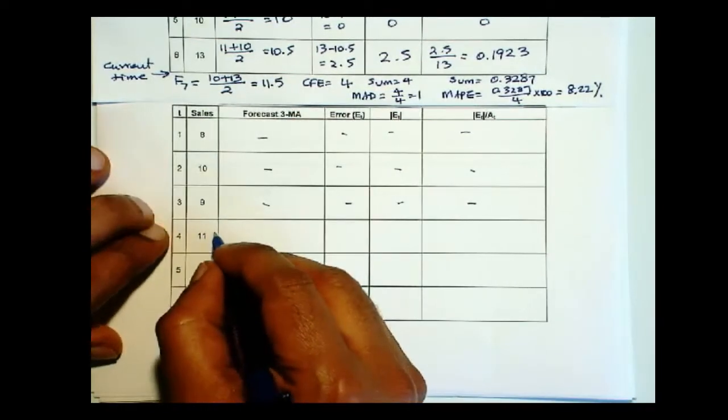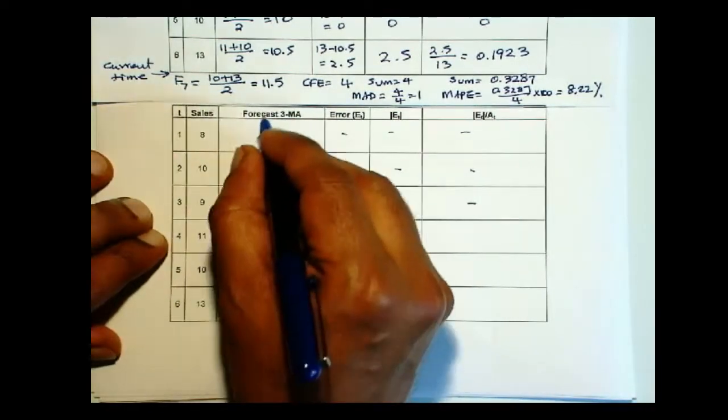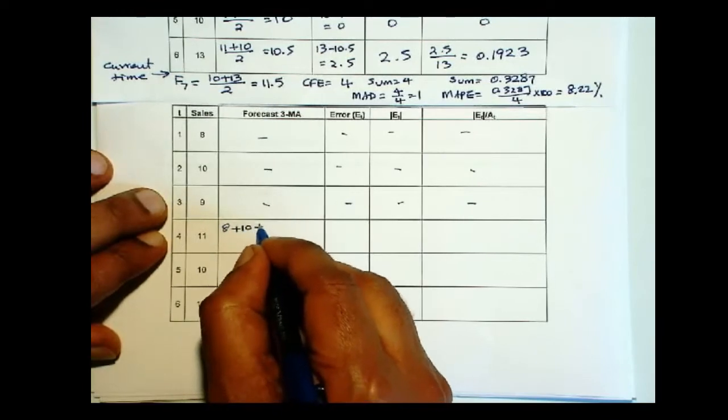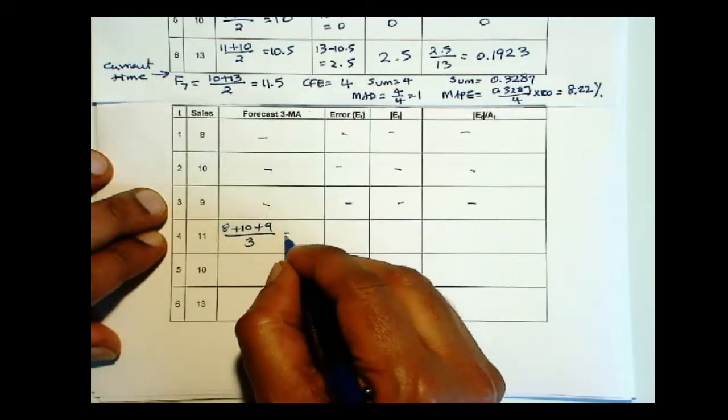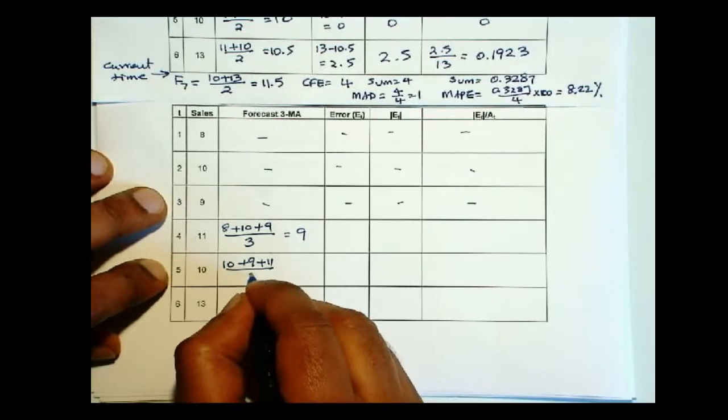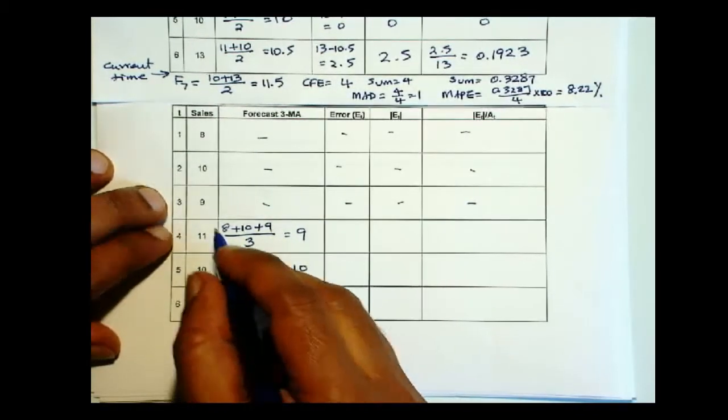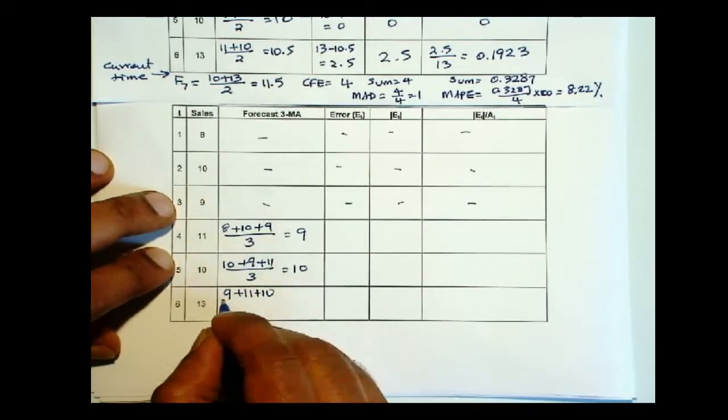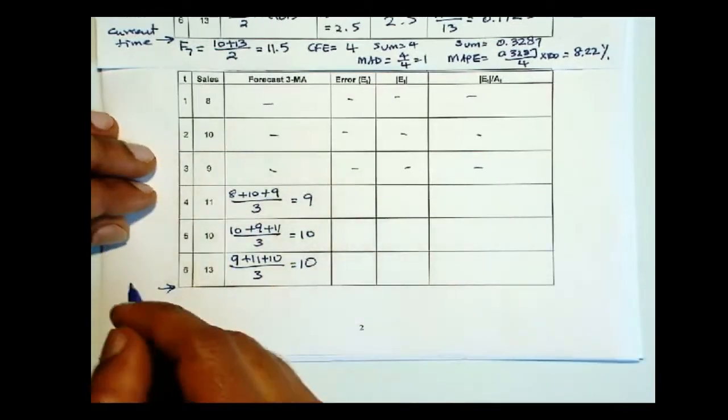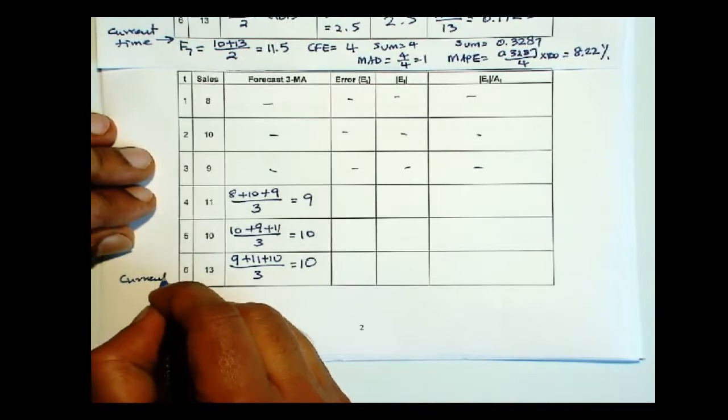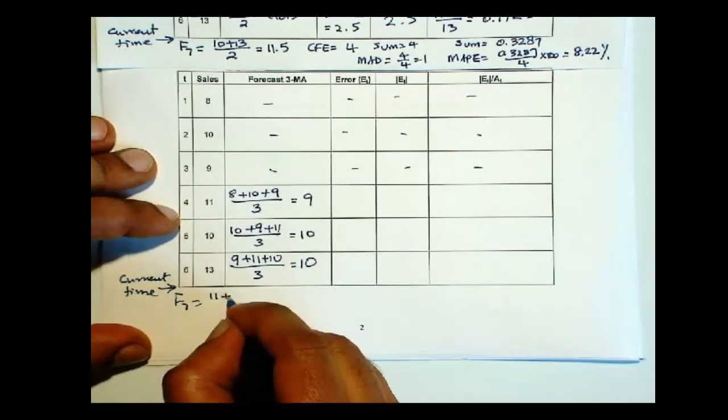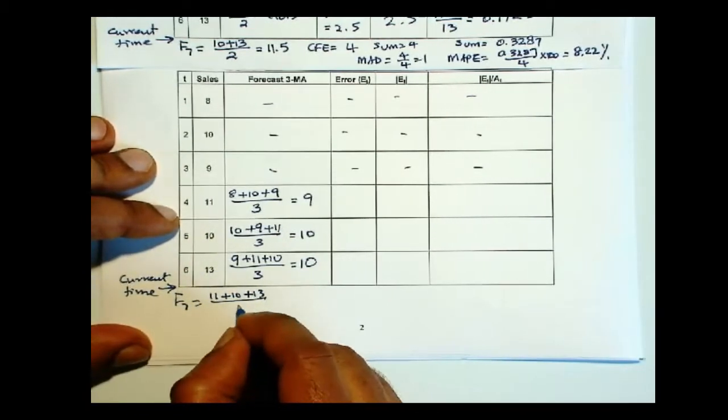Then forecast for period 4 will be the average of these 3 numbers. So this is 8 plus 10 plus 9 over 3 will give you 9. 10 plus 9 plus 11 over 3 is 10. Then 9 plus 11 plus 10 over 3 is 10. So this is 10. So this is the current time. So F sub 7 then is the average of these 3. So that will give you 11.3.